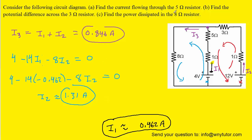Part A asks for the current flowing through the 5 ohm resistor. Looking at the diagram, the current I1 flows through that resistor, and we determined I1 to be 0.462 amps. So that is the correct answer to Part A.